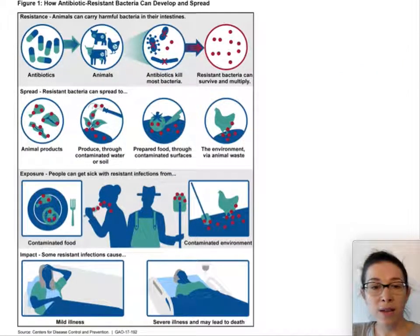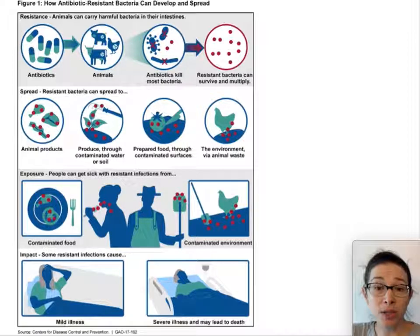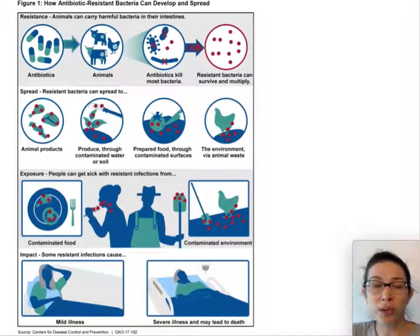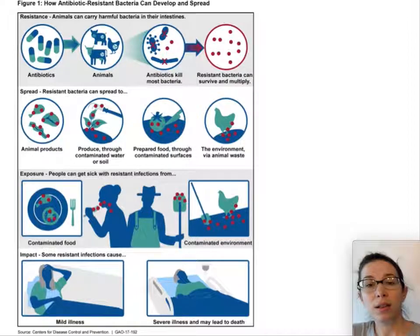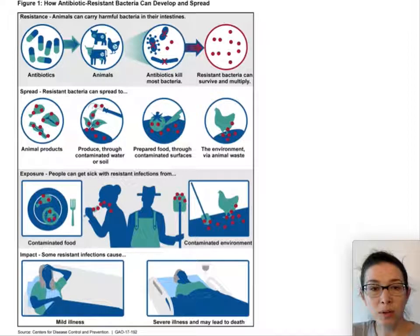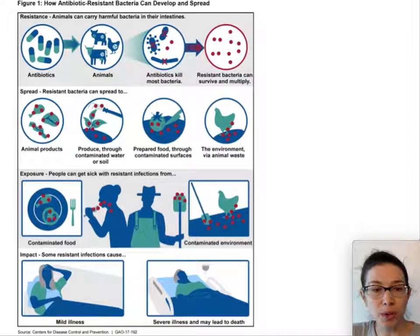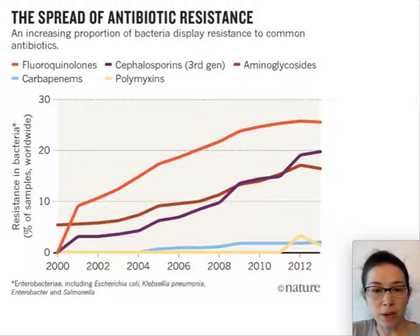Humans have dramatically affected antibiotic resistance by administering antibiotics in large doses and in many different situations, enhancing the presence of antibiotic resistant bacteria. A lot of our livestock are given antibiotics constantly — that's one way we have created a large population of antibiotic resistant bacteria. There are other ways too, which you can read about in this infographic at your own pace.